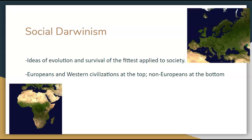Europeans applied their racism to Darwin's theories to create a new theory known as social Darwinism. Charles Darwin was not involved in the creation of this new idea — his ideas were manipulated in its creation.